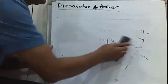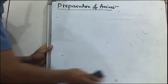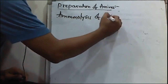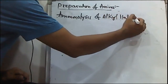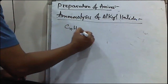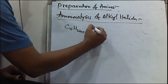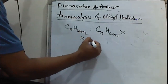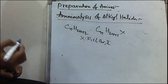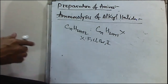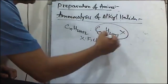The second method is Ammonolysis of Alkyl Halides. What is Ammonolysis of Alkyl Halides? Alkyl halides are compounds where one hydrogen in an alkane is replaced with a halogen such as fluorine, chlorine, bromine, or iodine — group 17 elements. Similarly, in benzene, when one hydrogen is replaced with a halogen, those compounds are called aryl halides.